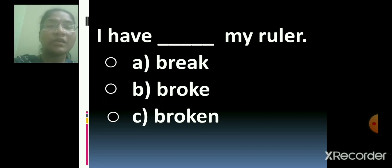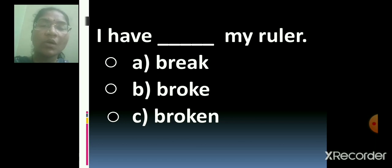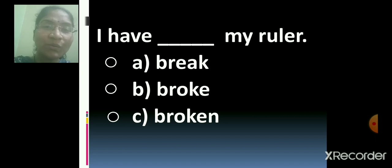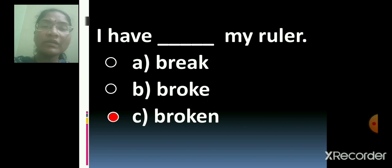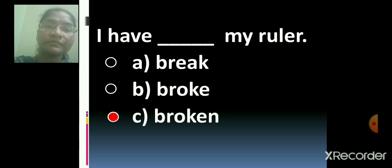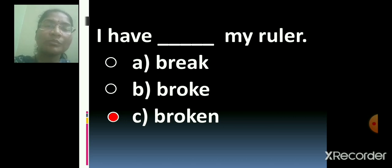I have dashed my ruler. I have break my ruler, or I have broke my ruler, or I have broken my ruler? Which will be the correct option? I have broken my ruler. So C is the correct option. I have broken my ruler. Now repeat after me. I have broken my ruler. I have broken my ruler. I have broken my ruler.